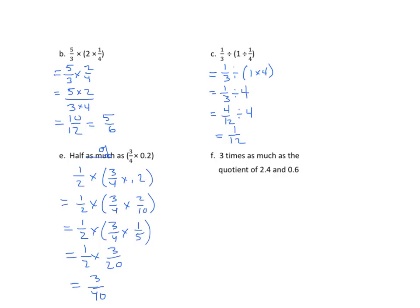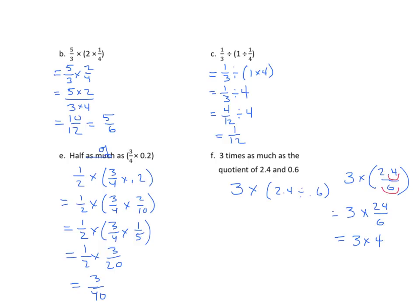Last evaluation: 3 times as much as the quotient of 2 and 4 tenths and 6 tenths. So: 3 times (2.4 ÷ 0.6). I can also write it as 3 times 2.4/0.6. Moving the decimals one place: 3 times 24 ÷ 6 equals 3 times 4 equals 12.